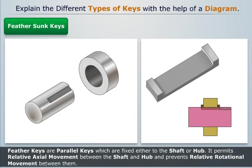Feather keys are parallel keys which are fixed either to the shaft or hub. It permits relative axial movement between the shaft and hub and prevents relative rotational movement between them.